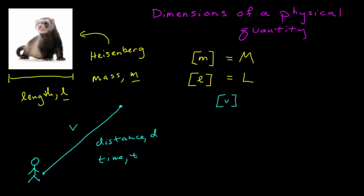Now the dimension of velocity is length per time. It's not one of the fundamental quantities, so its dimension is represented in terms of the other dimensions.